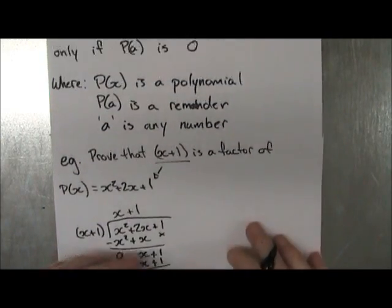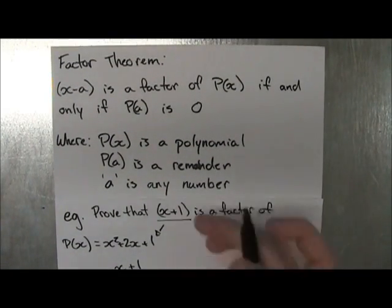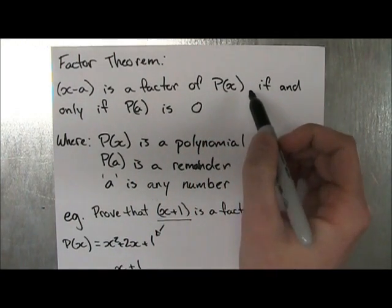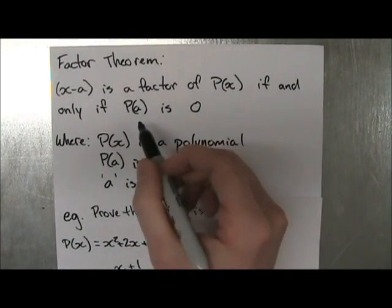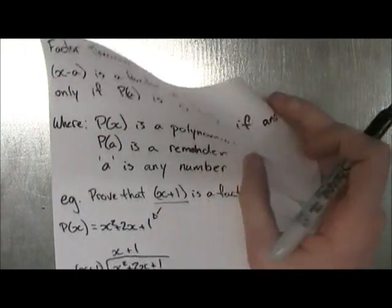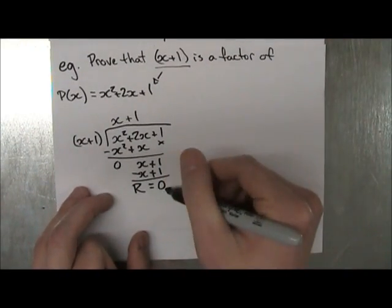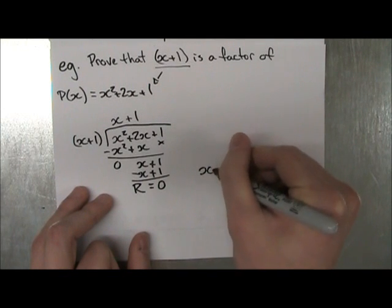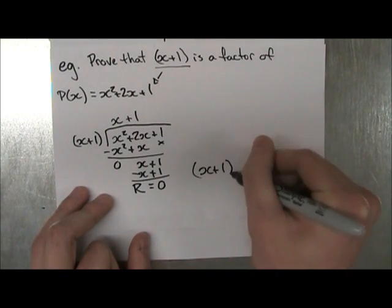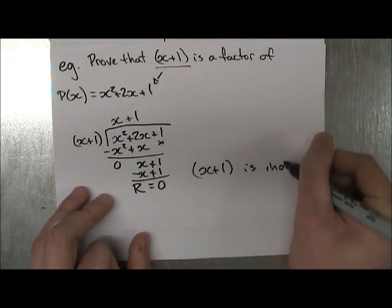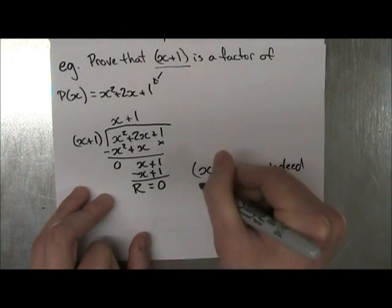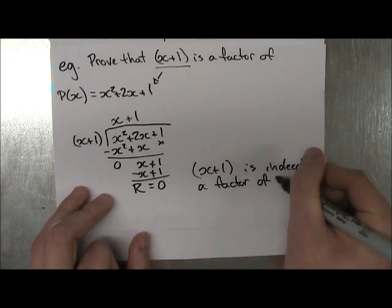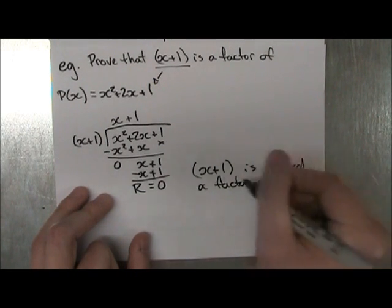So if you go back to the theorem again, it says x minus a is a factor of P(x), of our polynomial, if the remainder is 0. And we found that the remainder is 0. So that means x plus 1 is indeed a factor of P(x), and we just proved that using this.